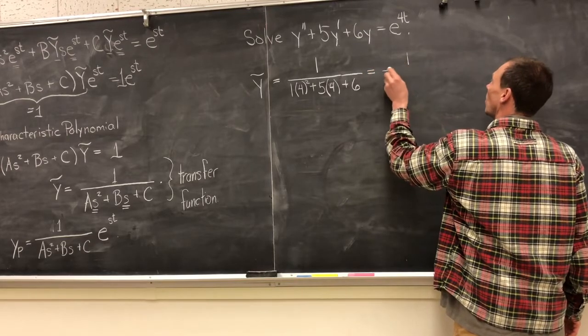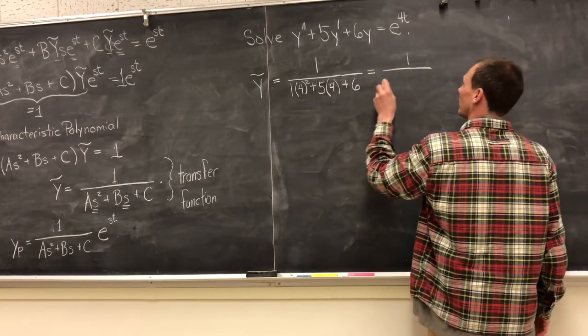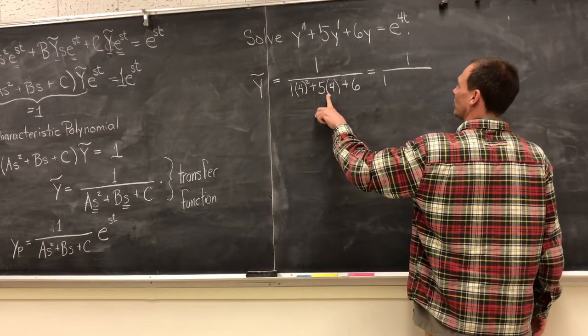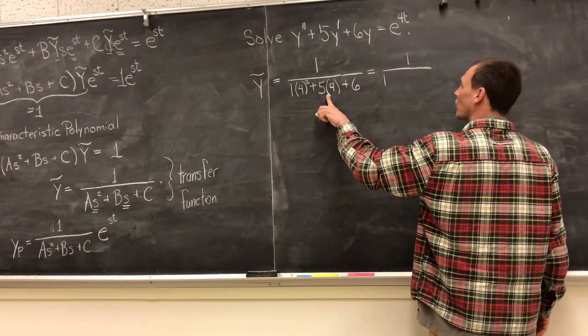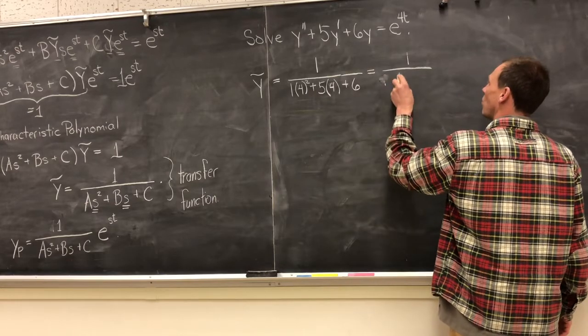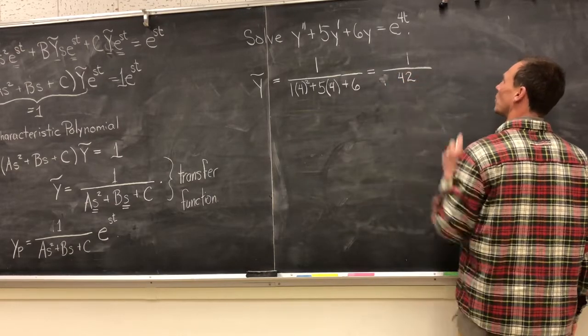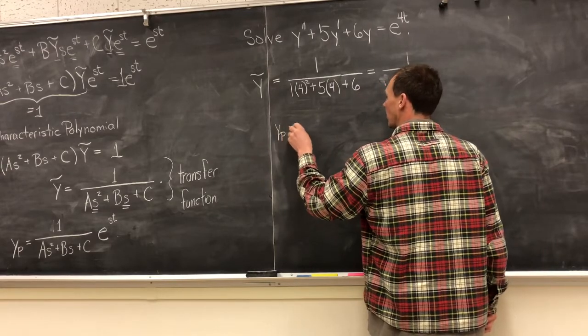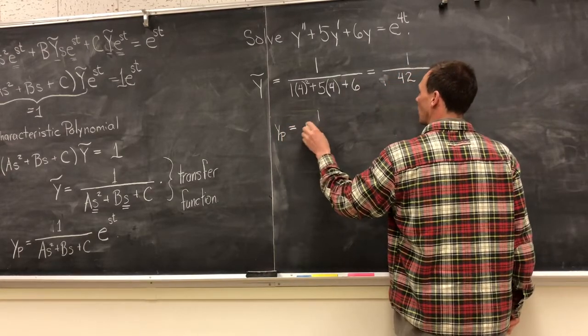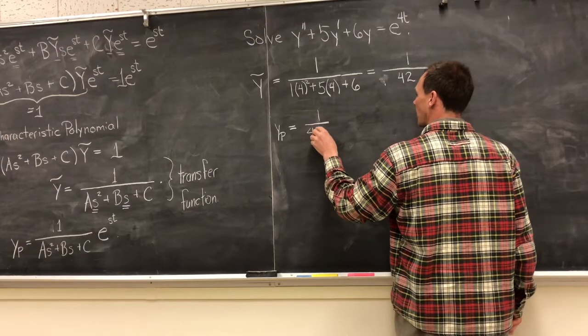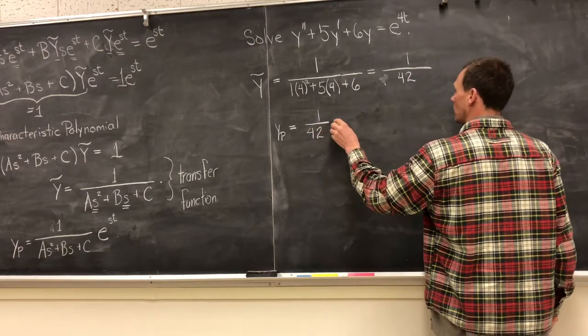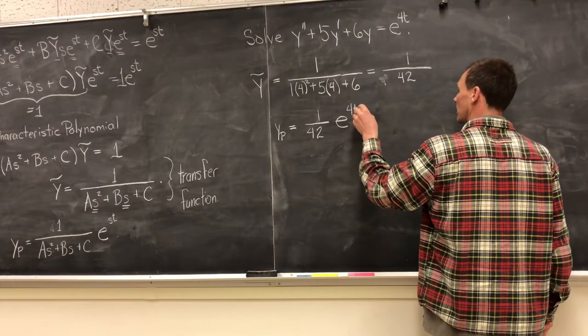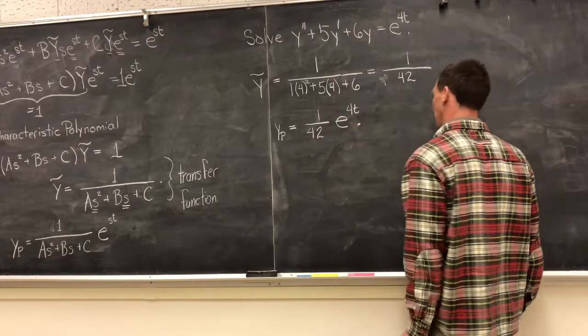So if we calculate this, this is going to be one over—that's a lot—16 plus 20, that's 36, 6 more, so we have 1 over 42. So we can write our y particular is (1/42)e to the 4t.